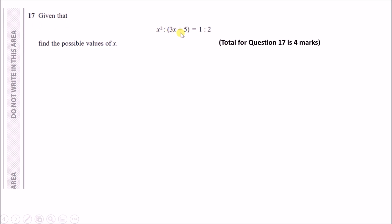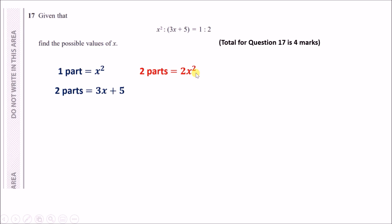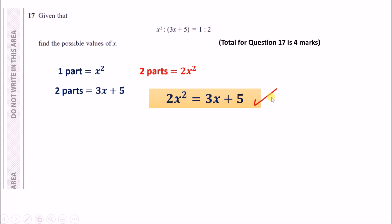Number seventeen: given that x² : 3x + 5 = 1 : 2, one part = x² and two parts = 3x + 5. Doubling the first: two parts = 2x². Setting equal: 2x² = 3x + 5. Rearranging to a quadratic: 2x² − 3x − 5 = 0.